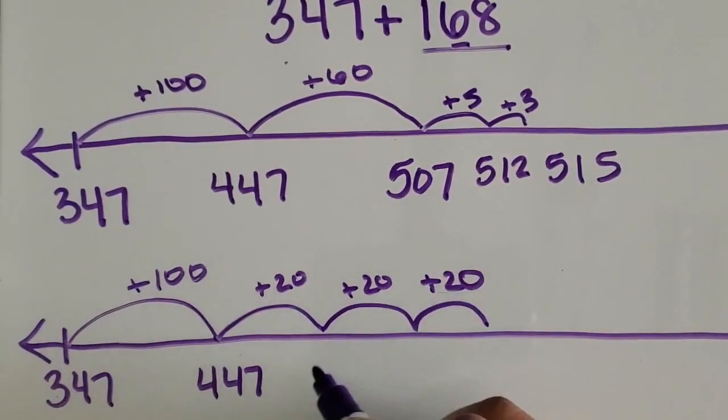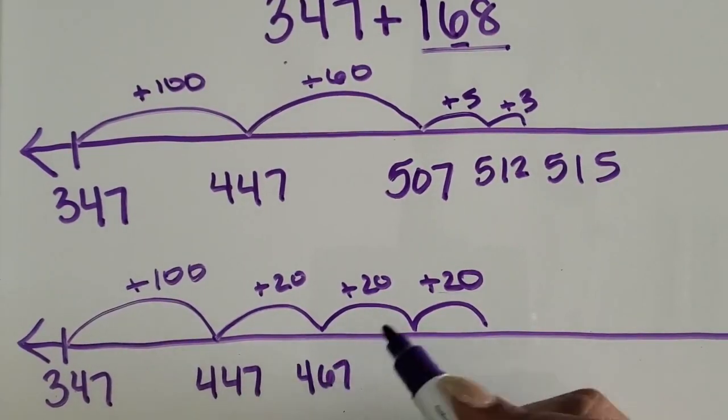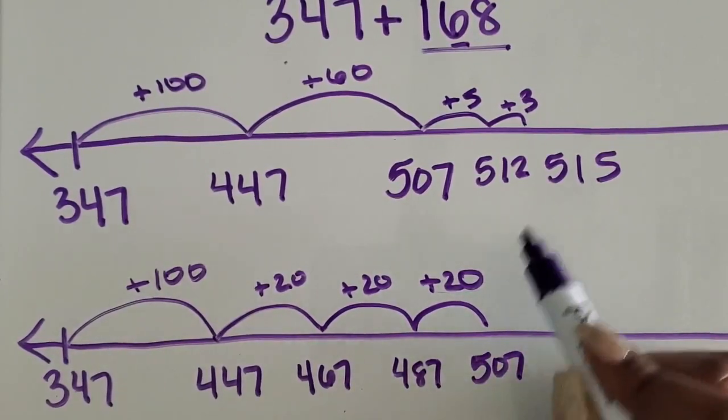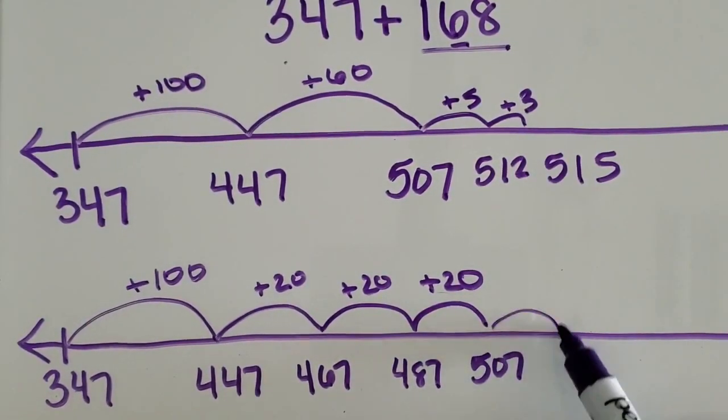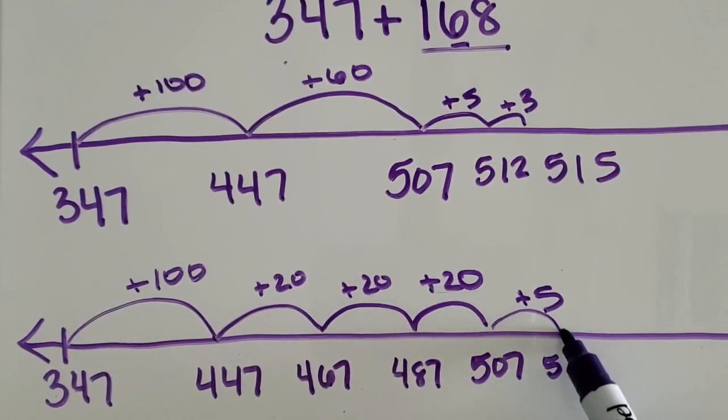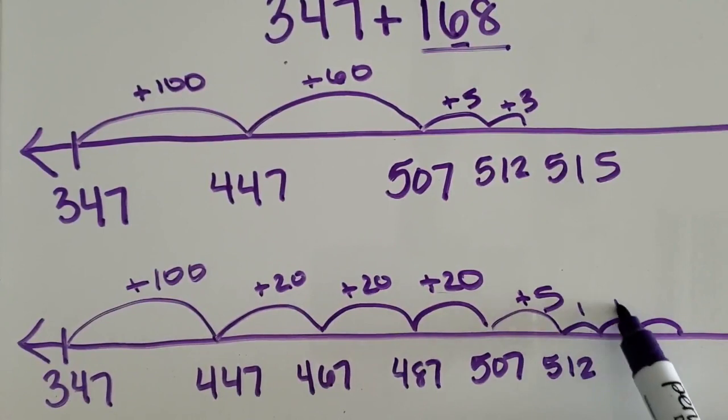447 plus 20 is 467, plus 20 more is 487, plus 20 more is 507. Then we can add our eight ones by adding 5, which makes 512, and then adding 1, 2, 3, which gives us 515.